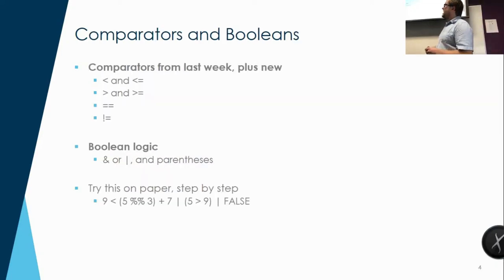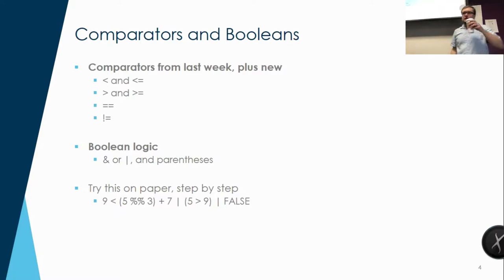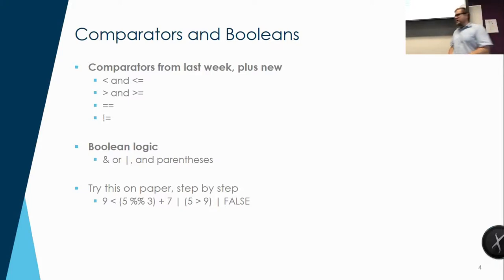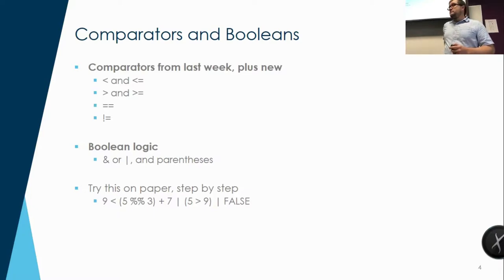New concepts. We actually started with old concepts and made them a little more complicated, which is Boolean logic. We talked about comparators last week: less than, greater than, equality, and not equals. We added greater than or equal to and less than or equal to. We also added the ampersand symbol and the pipe. And is AND; pipe is OR.